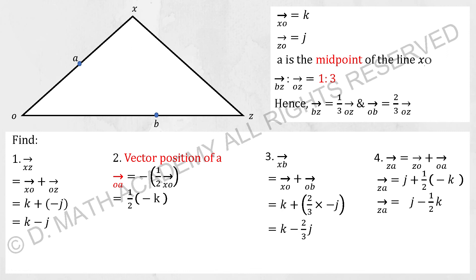Why is it negative J? Because the stuff that we have is actually J where it's Z to O. However, we have switched the direction of it from O to Z. Hence, it will become negative J.